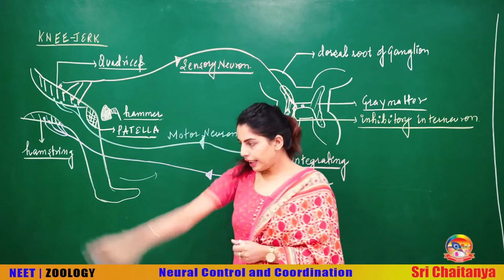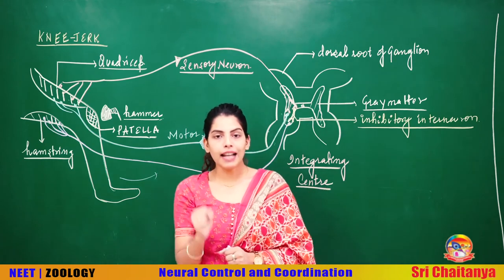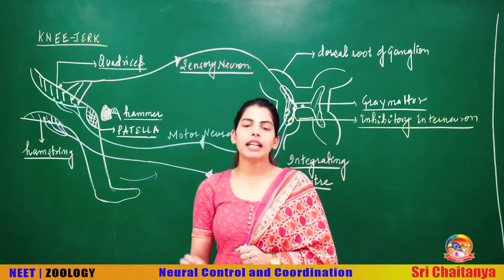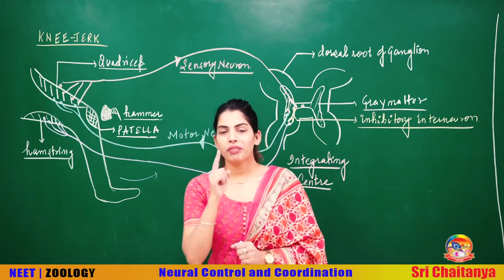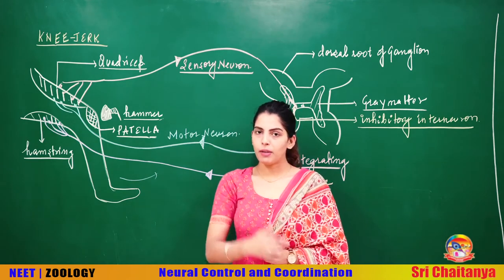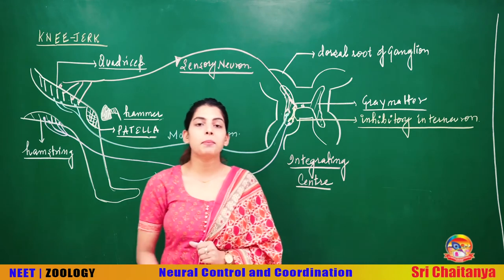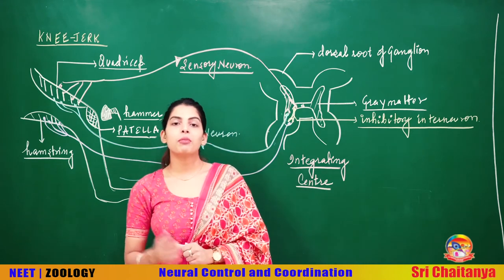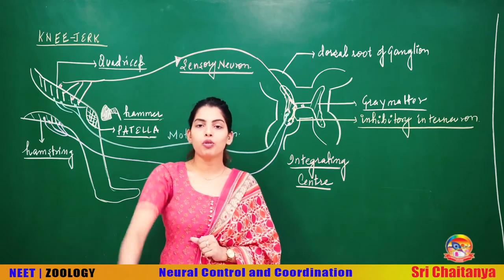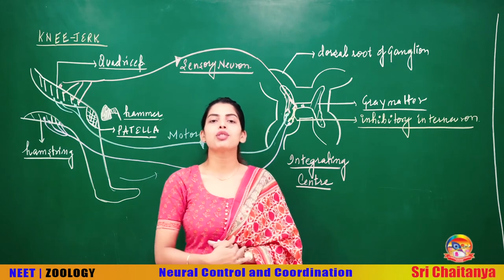As soon as the sensory neuron passes the information to the motor neuron in the gray matter of the spinal cord, suddenly you will show the jerk. Jerk — the information passed to the quadricep muscles causes them to contract and when they contract, you show this jerk. Knee jerk reflex action does not involve any interneuron — it has simply a sensory neuron passing information to a motor neuron.